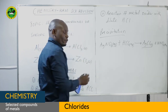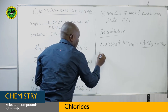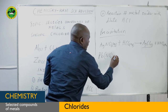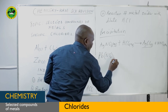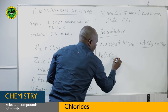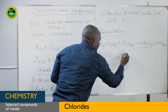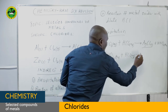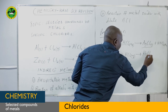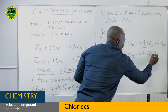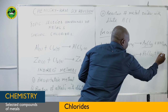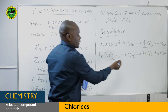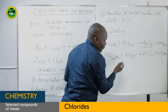Likewise, if you have lead nitrate in aqueous solution and treat it with diluted hydrochloric acid, you end up getting lead chloride, which is solid, plus nitric acid, which is aqueous. You can balance the equation. This lead chloride is now our precipitate formed.